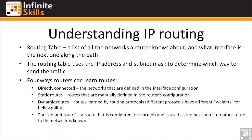Last but not least is the default route. This is a route that is configured or learned through a dynamic routing protocol, and it's used as the next hop if no other route to the network in question is known. If you look at the routing table on a router, it will tell you the gateway of last resort is a specific IP address. If it's not directly connected, not known through a static route, and not learned via a dynamic route, the router will just forward the traffic to that gateway.